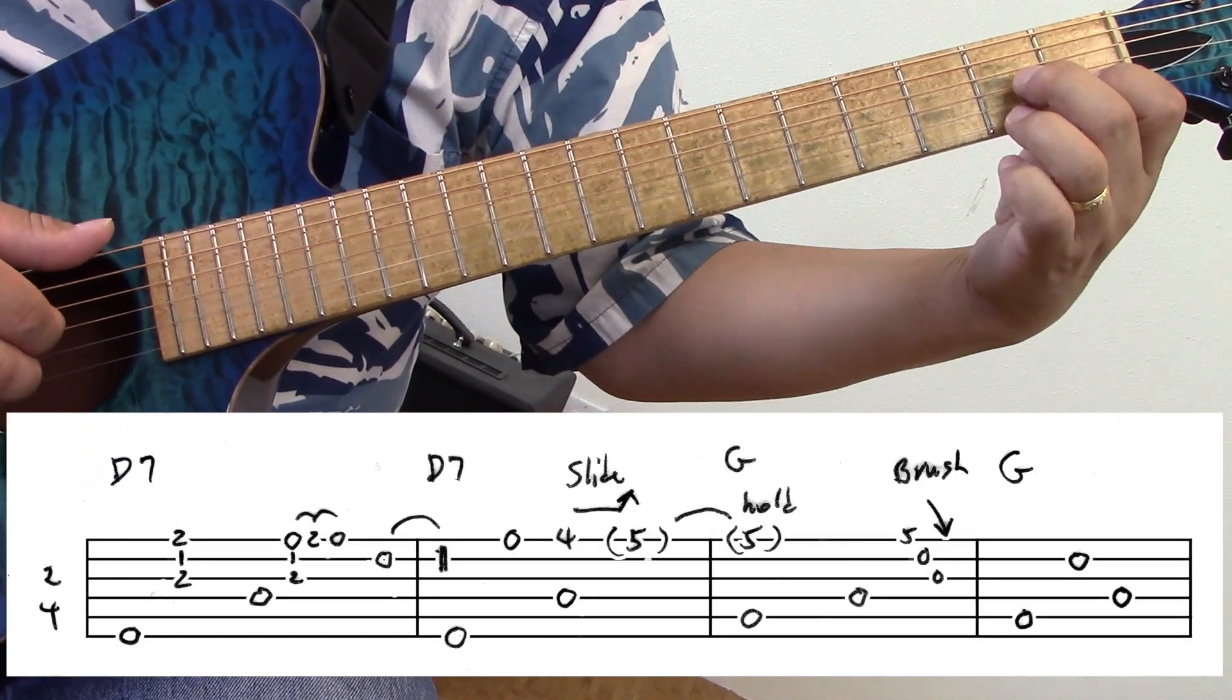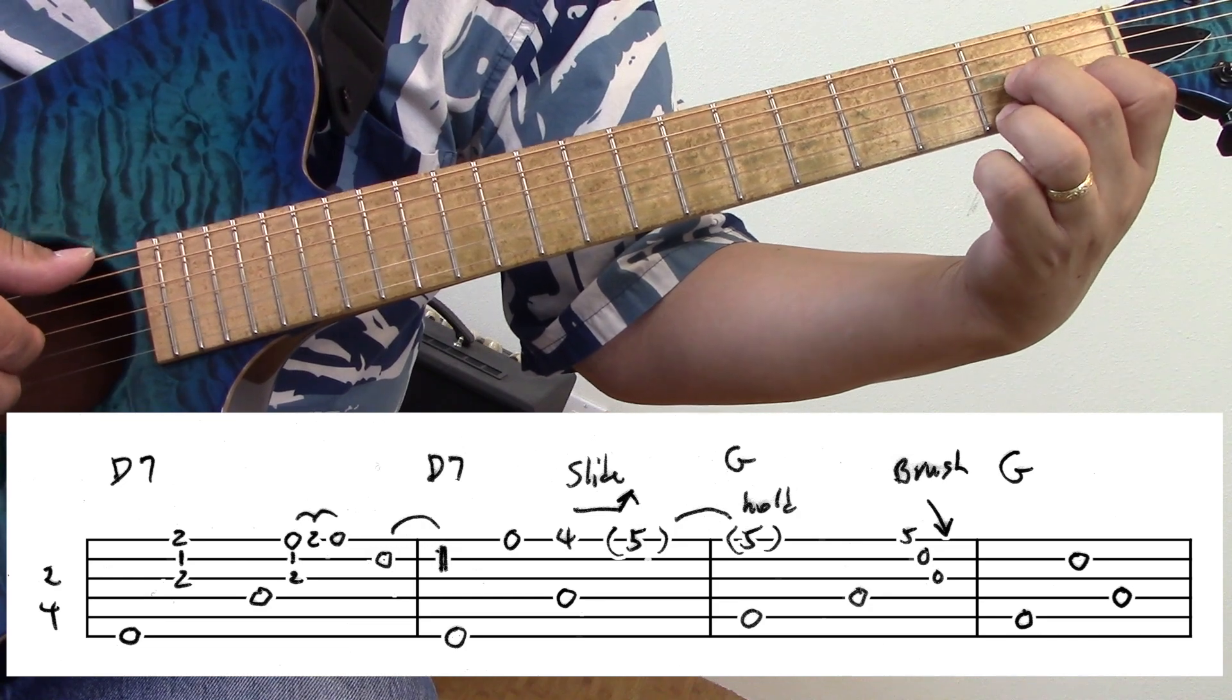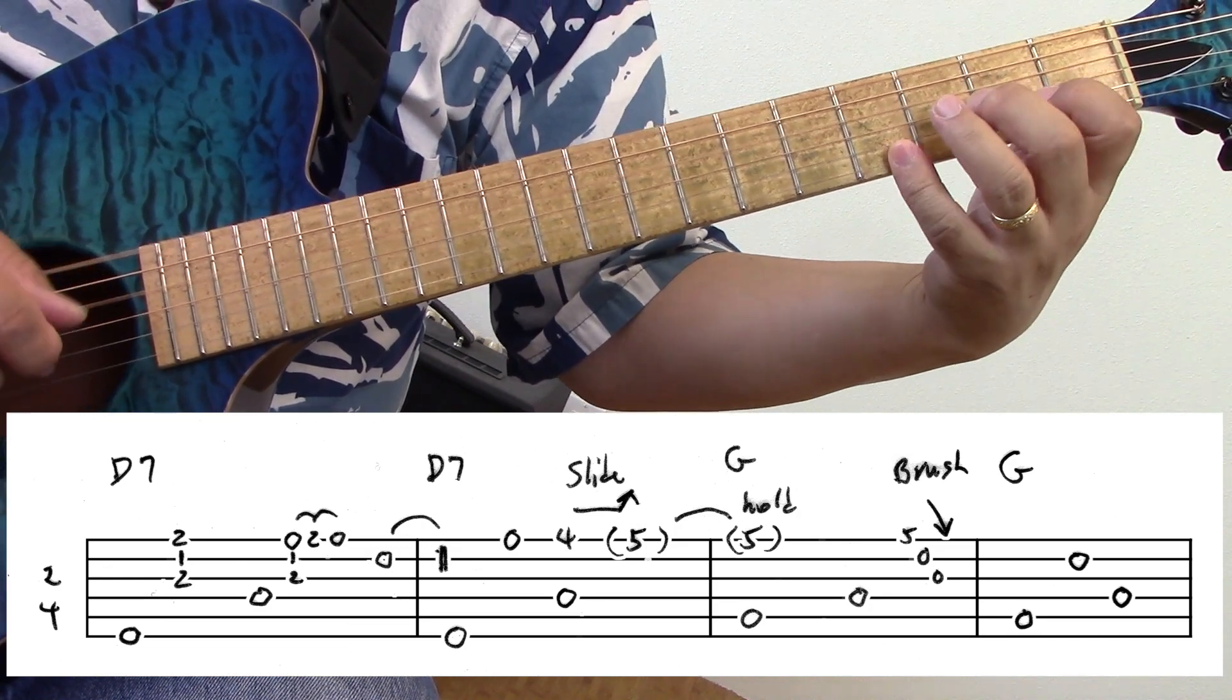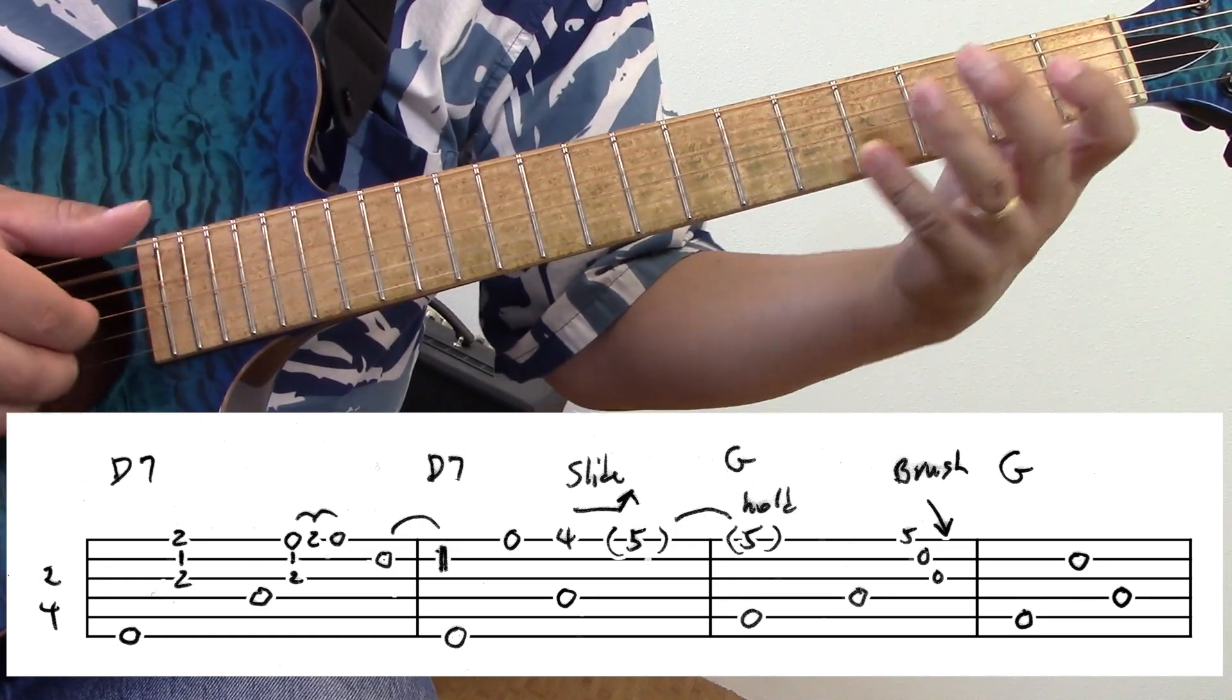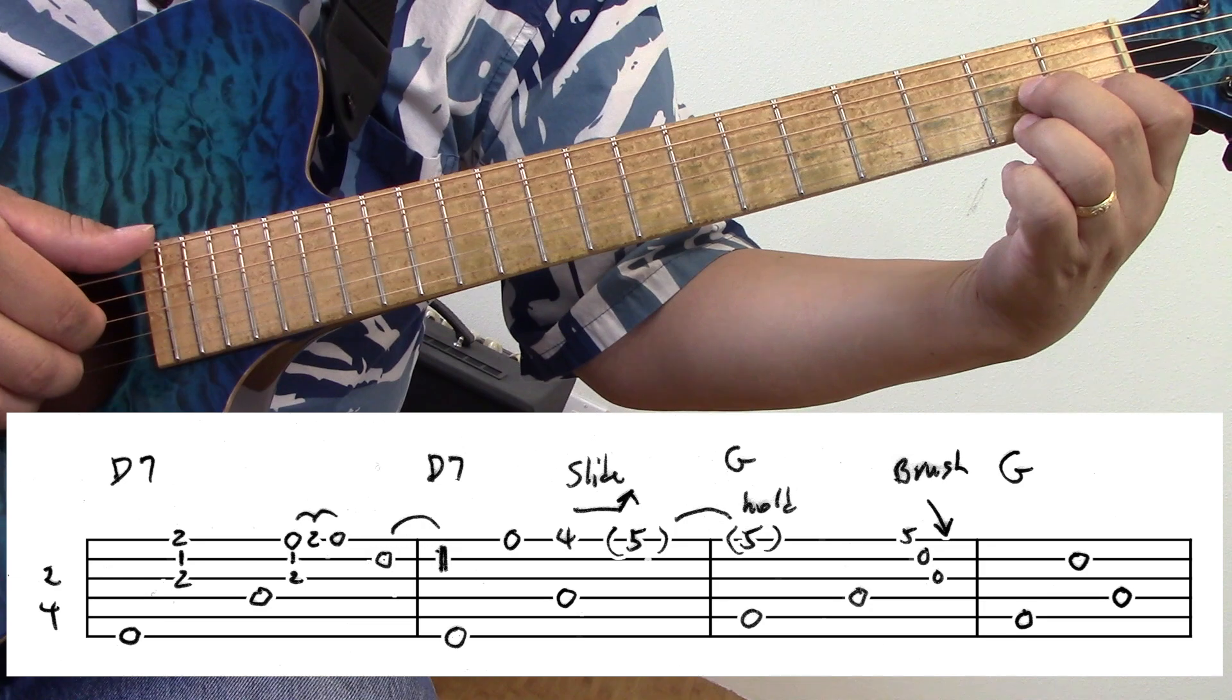Next vamp. I start with this shape. This is a tricky move because you have to squish all these notes.